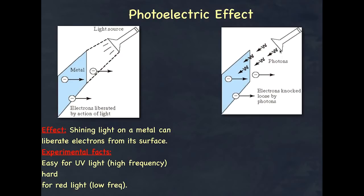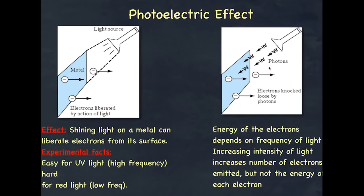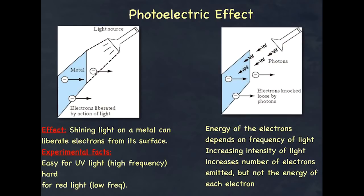These discrete amounts — what we now know as photons — have a specific wavelength and therefore a specific frequency. Einstein suggested that the energy of the photons contributes to the release of electrons. Each photon has an amount of energy. Increasing the intensity of the light only increases the number of photons. A photon has a certain amount of energy equal to hf. That energy will determine whether the electron gets released. If the energy is too low, the electron won't be released. But if it's high enough, the electron will be released, and anything left over contributes to the electron's kinetic energy.